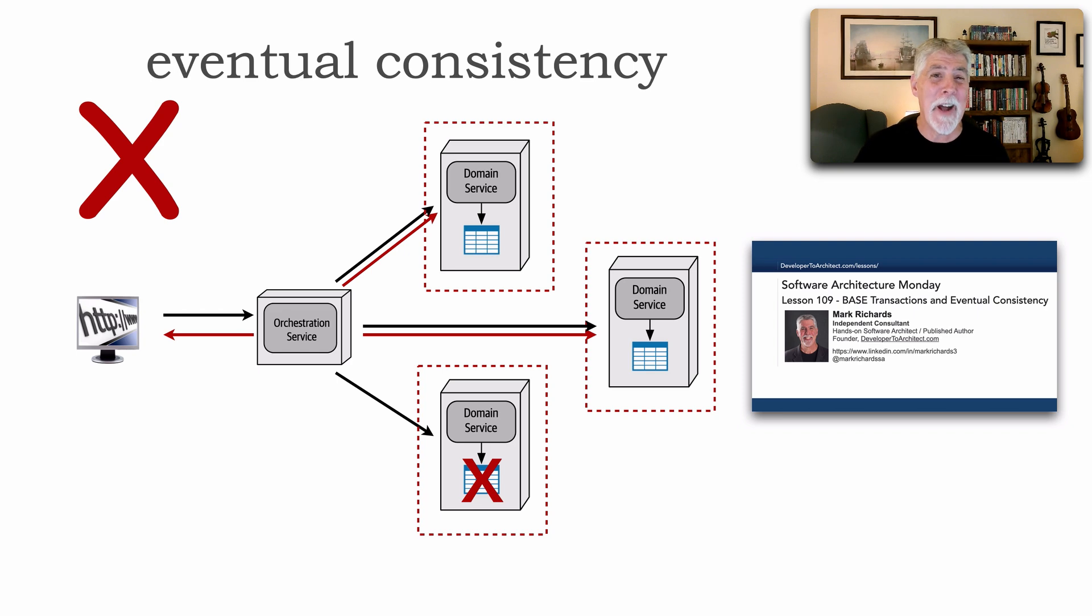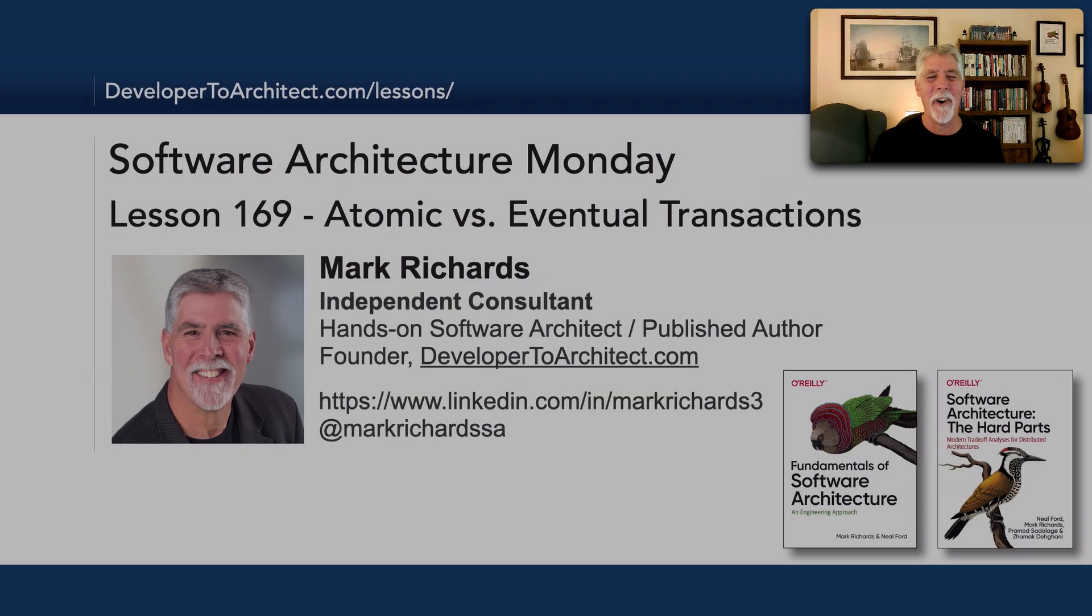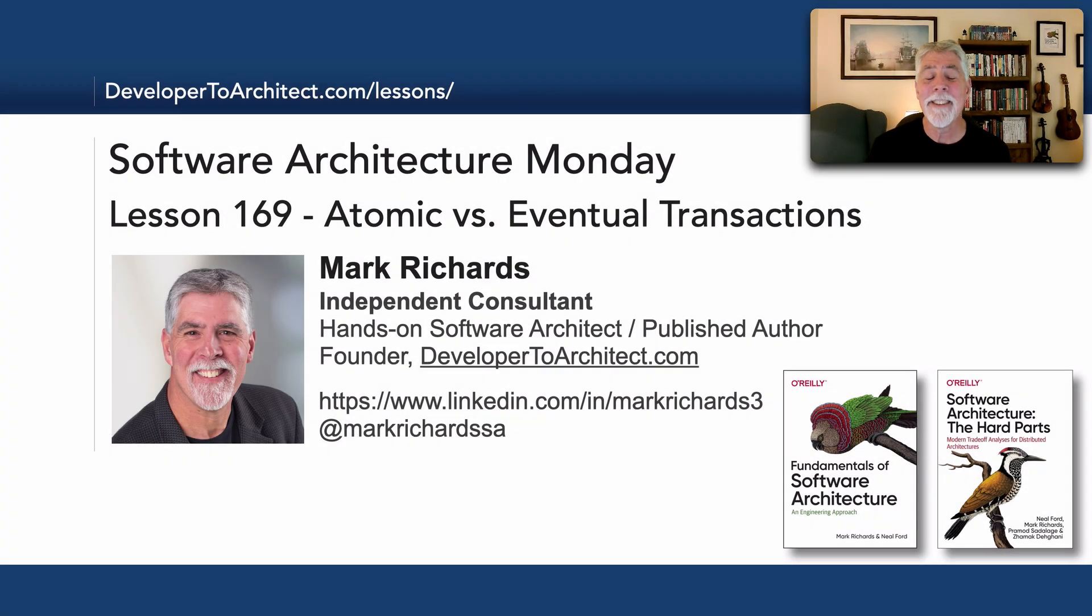I suppose in hindsight I probably should have done this lesson first and then the eventual consistency patterns. So if you haven't seen Lesson 109, you can certainly watch this one first and then see the patterns to make things eventually consistent. This has been Lesson 169, Atomic versus Eventual Transactions within a Distributed Architecture. Stay tuned in two more weeks for the next lesson in Software Architecture Monday.